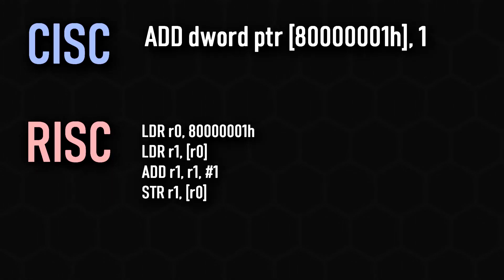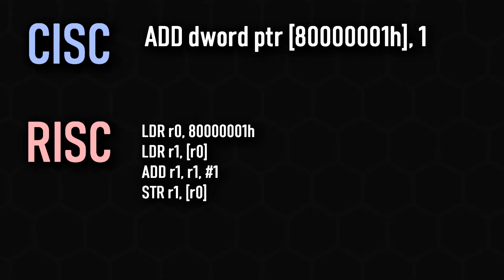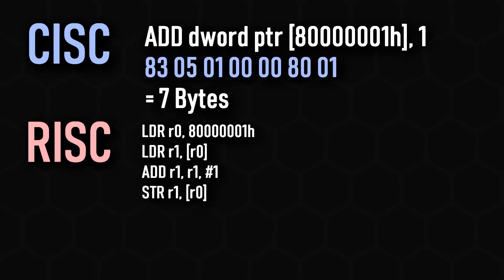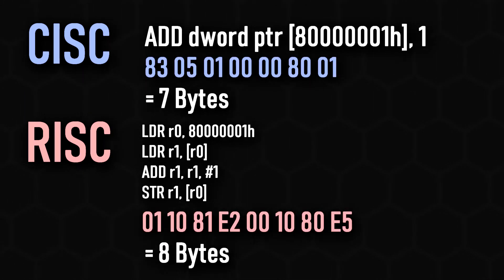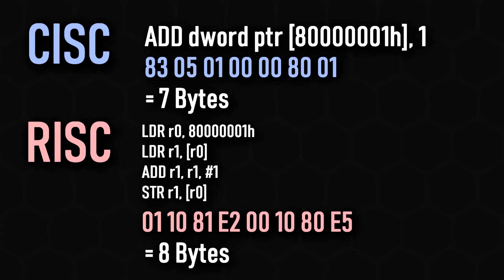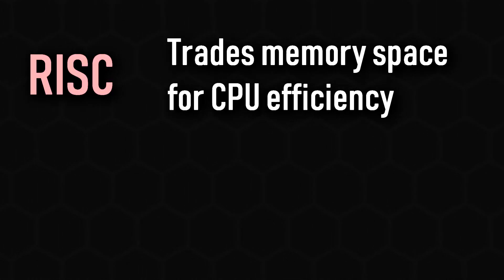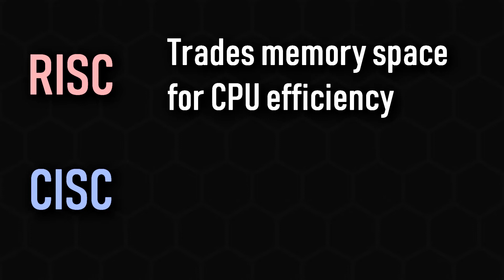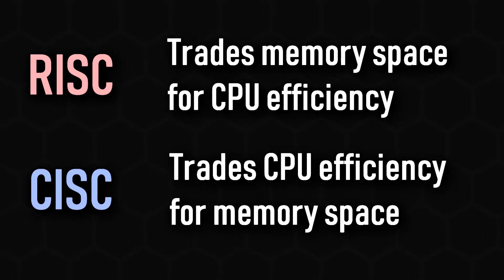Here is an example of this in action. The two bits of code do exactly the same thing, except the CISC version takes up 7 bytes while the RISC takes up 8 bytes. So to put it simply, RISC trades memory space for efficiency, while CISC sacrifices efficiency for memory space.